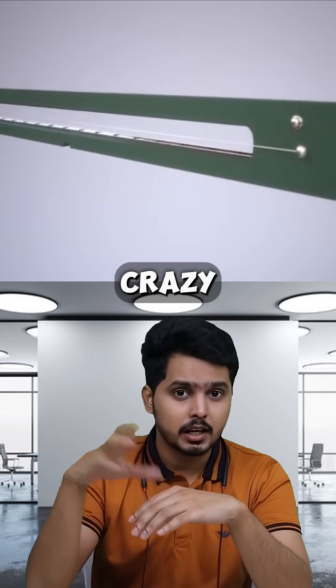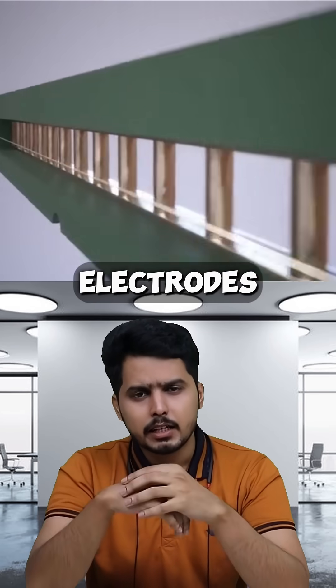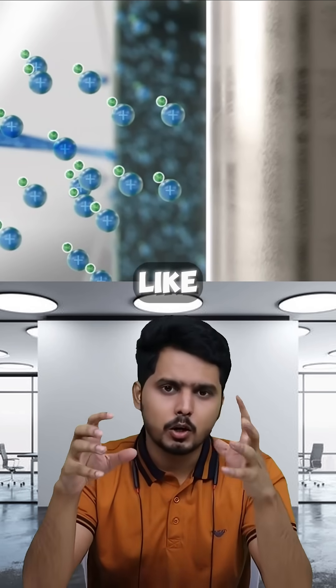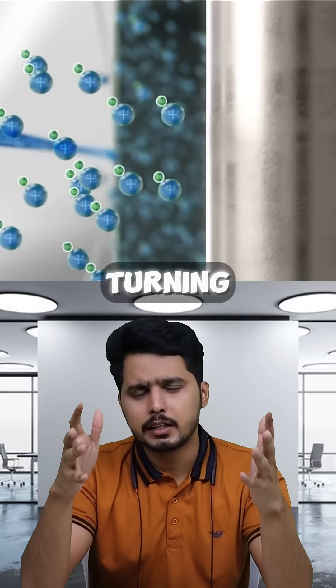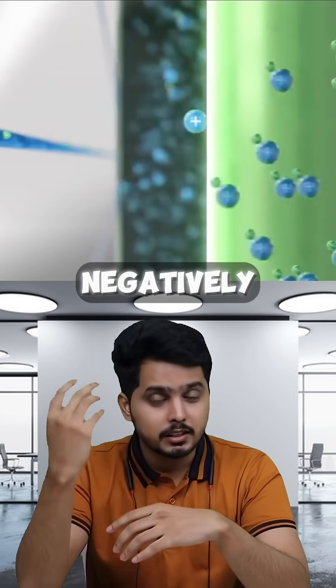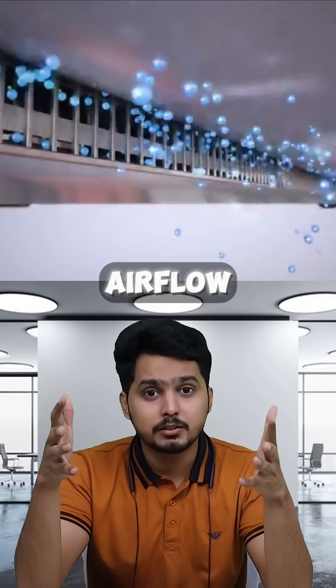The tech behind it is crazy. A wire and a grid act as electrodes. When voltage runs through the wire, it ionizes air molecules like oxygen and nitrogen, turning them into charged particles. These particles then rush towards the negatively charged grid, and that movement generates airflow.